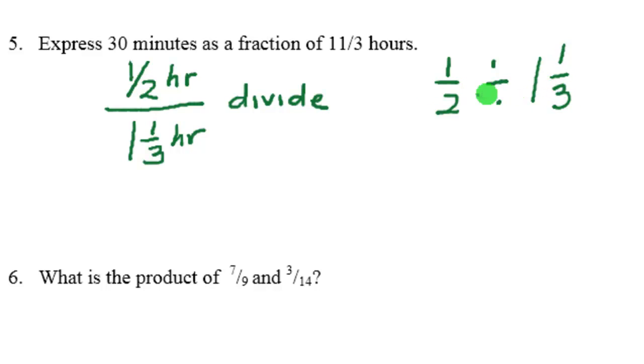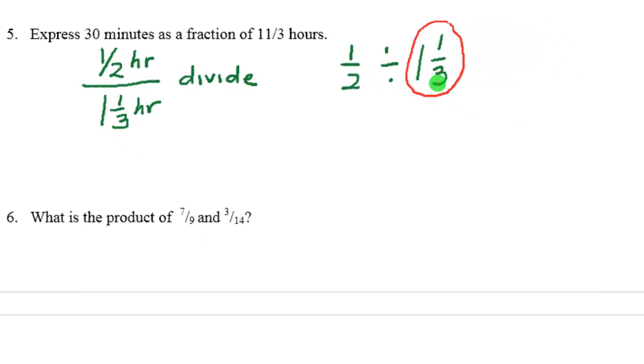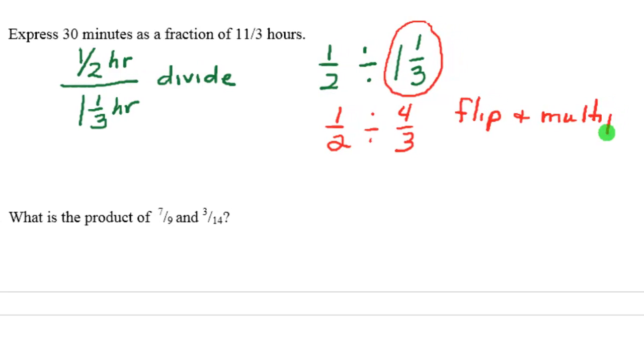So let's write this as 1/2 divided by 1 and 1/3. Now when you're dividing fractions, first of all, you don't want a mixed number. So you're going to change your 1 and 1/3 to an improper fraction. That's going to be 3 times 1, just 3 plus 1, or 4/3. So now we have 1/2 divided by 4/3. And with division of fractions, you're going to do what I like to call flip and multiply.